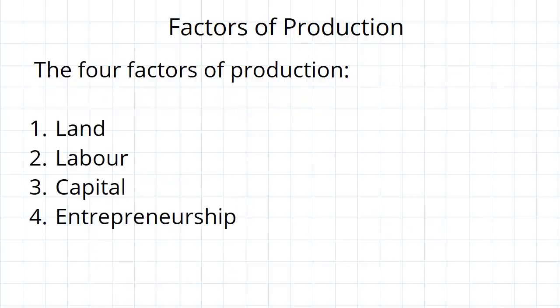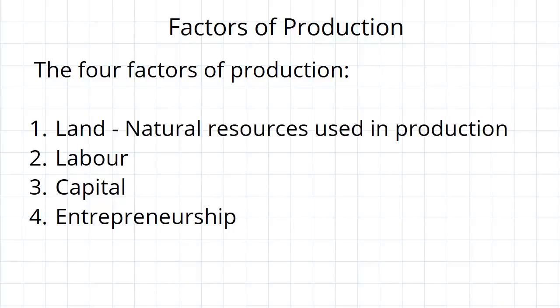There are four different factors of production. There is land, labor, capital, and entrepreneurship. Land is the natural resources used in production. Obviously it would cover land itself, as given by the name, but also any naturally occurring resources that come with the land, for example something like minerals.